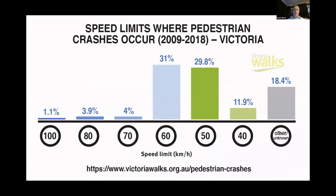In terms of speed limits, most crashes occur in the 50 or 60 km/h zones, with 60 being the most common. That's largely reflecting the most common speed zones. But when you look at fatality data, there's a very strong skewing of fatalities to higher speed roads — about three quarters of pedestrian fatalities occur on 60 to 80 km/h roads.